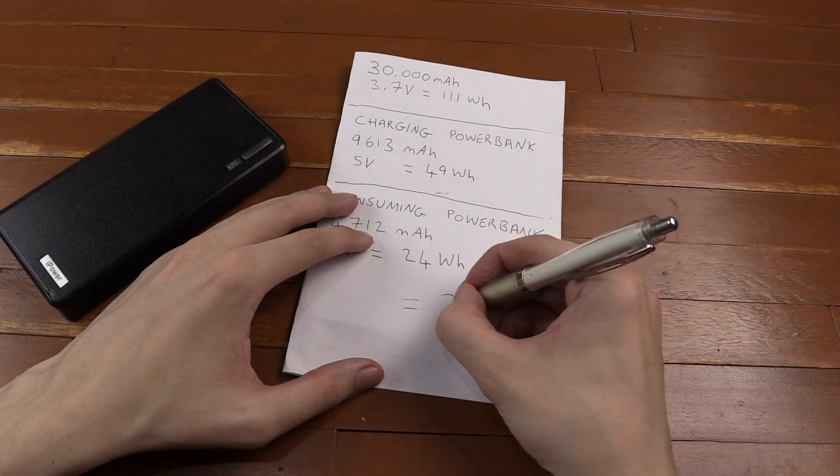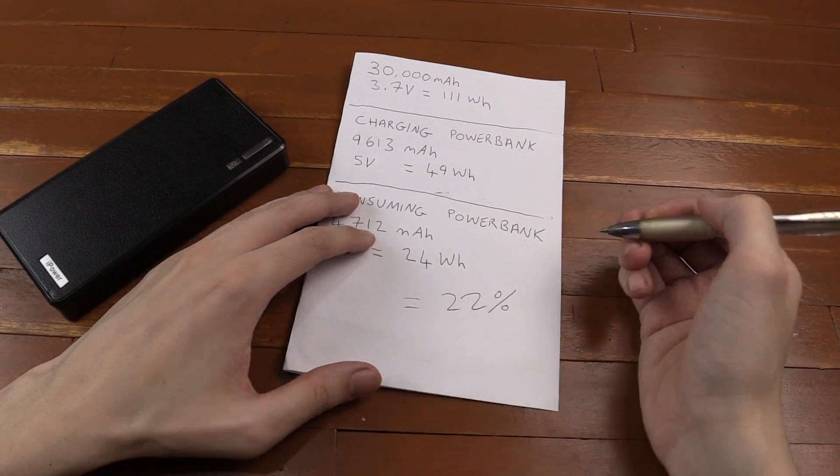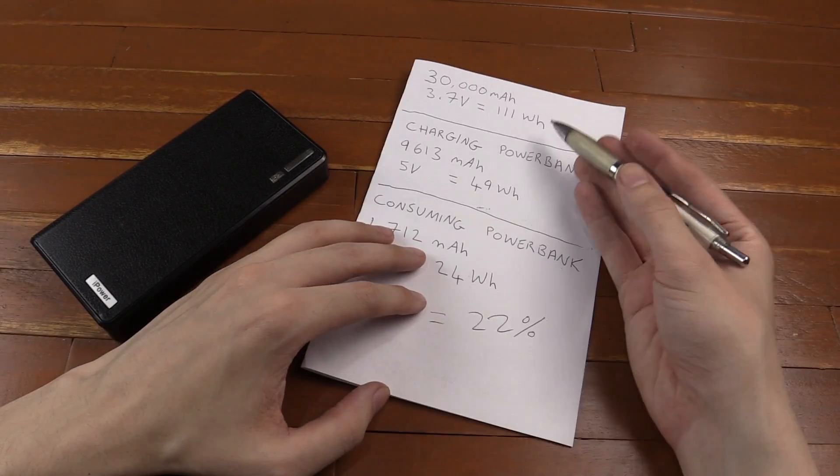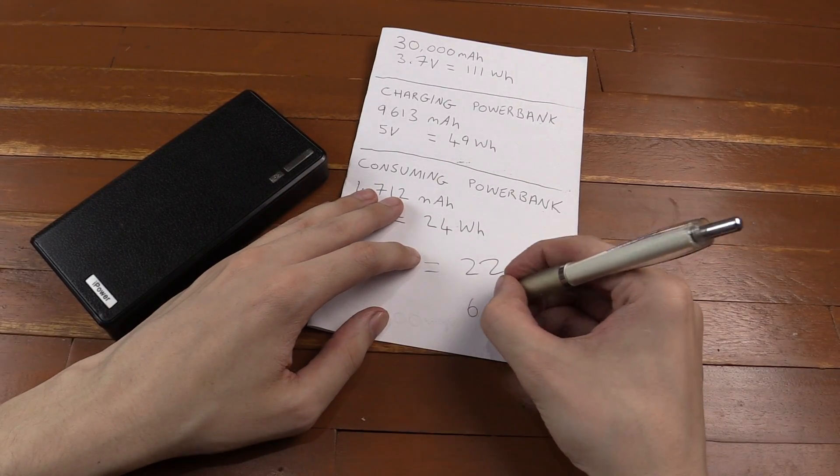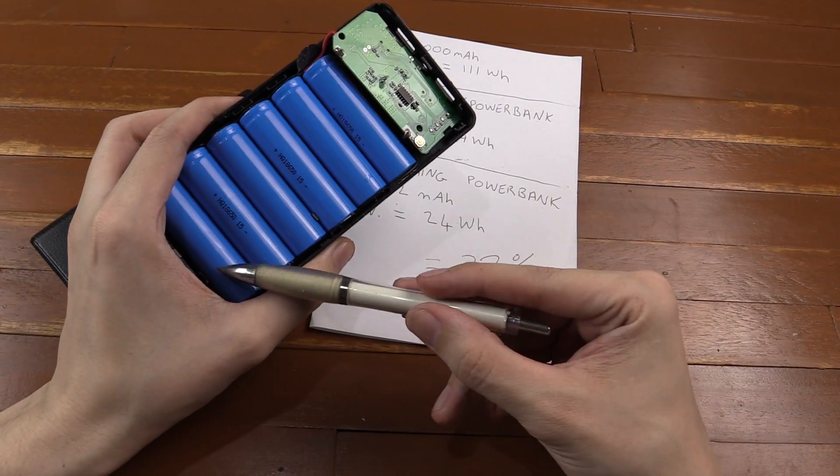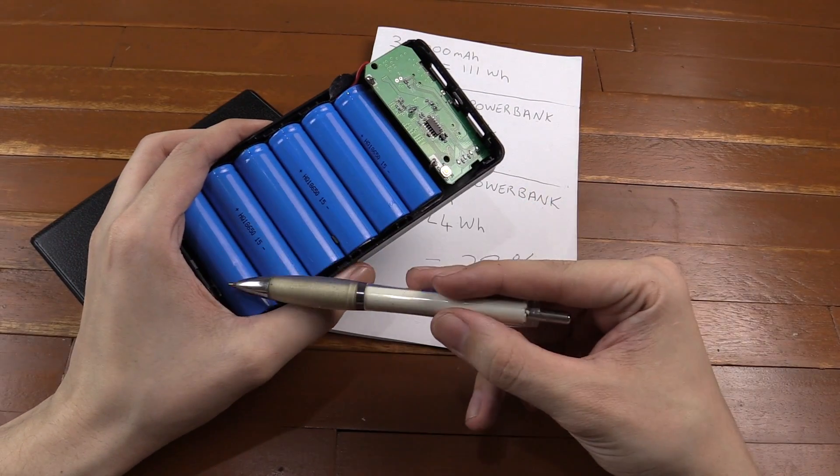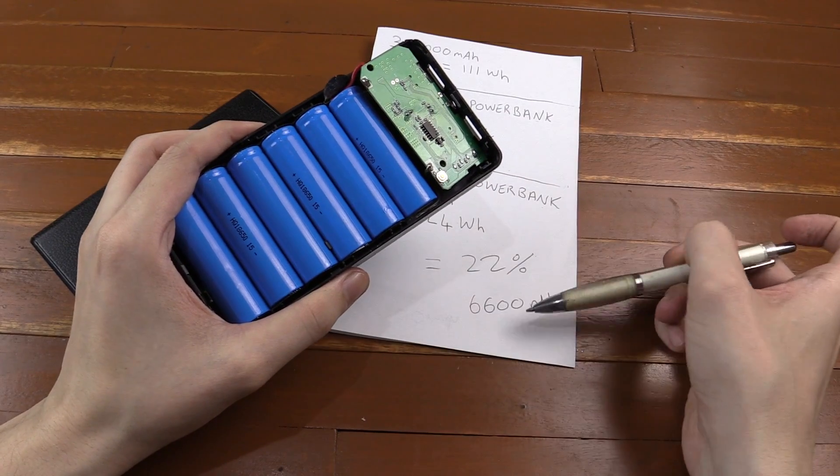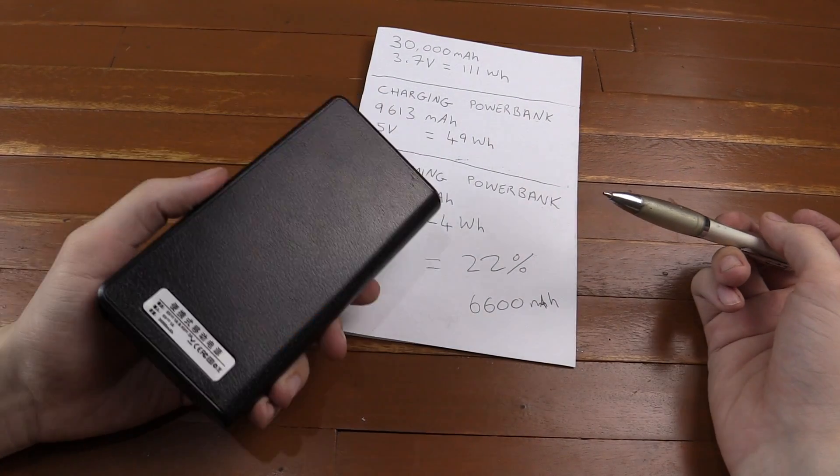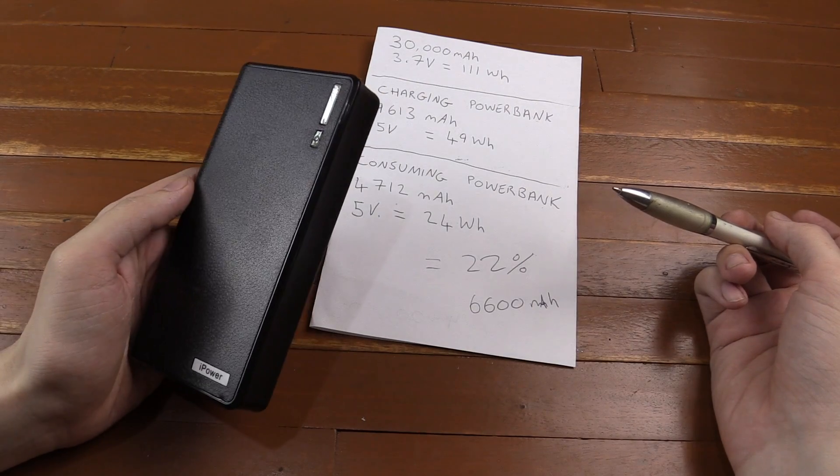So this works out to around 22%. So it's nowhere near 30,000 milliamp-hour. And 22% of 30,000 would be 6,600 milliamp-hour, which would basically mean that these are the cheapest cells you can get, pretty much like 1 amp-hour each, and that's why we're only getting 6,600 milliamp-hour. So this thing is absolutely bogus, and it's going back to Ensogo for a refund.